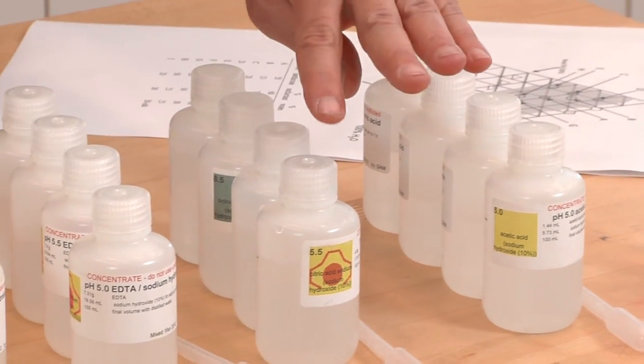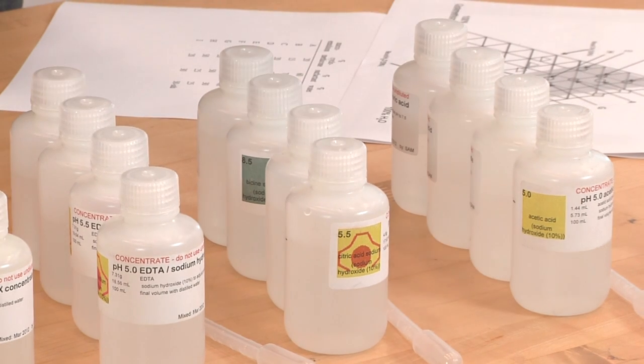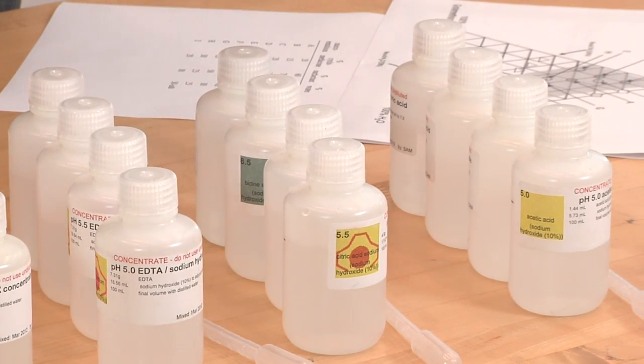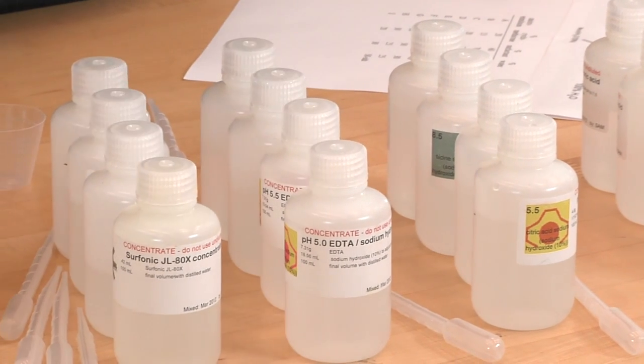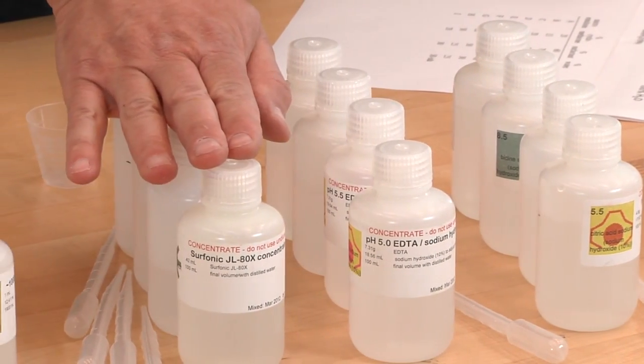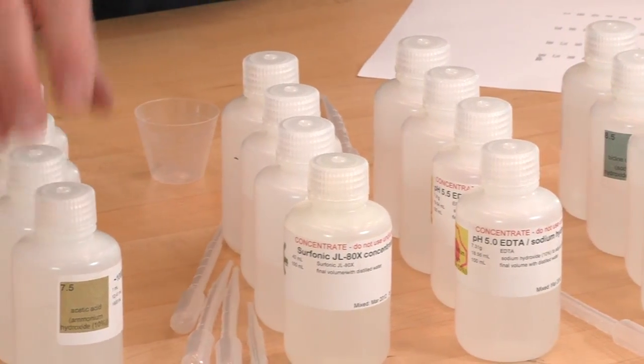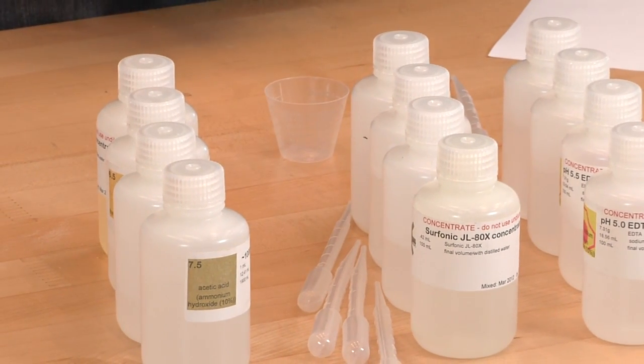Our citrates, same pHs: 5.0, 5.5, 6.0, 6.5. The EDTAs, same pHs: 5.0. And then our surfactants, which we won't be using, and then our rinse solutions that are pH adjusted and conductivity adjusted.